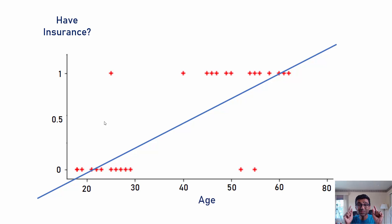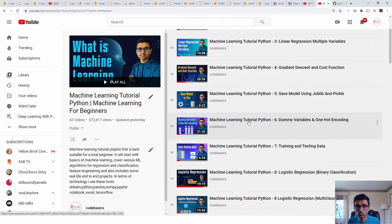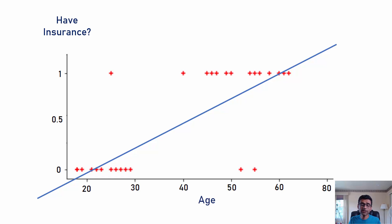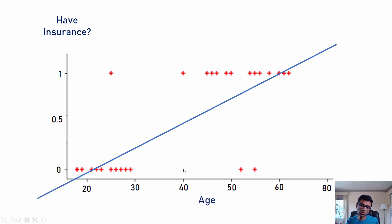Linear regression — if you don't know that concept, go to my tutorial playlist and follow tutorials number two and three, which talk about linear regression. Using that, you can draw a best-fit line. Since you can't draw a single line that passes perfectly through all the data points, you come up with the best possible fit — and this is that best-fit line.